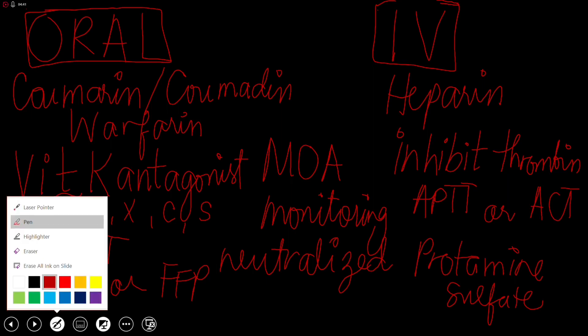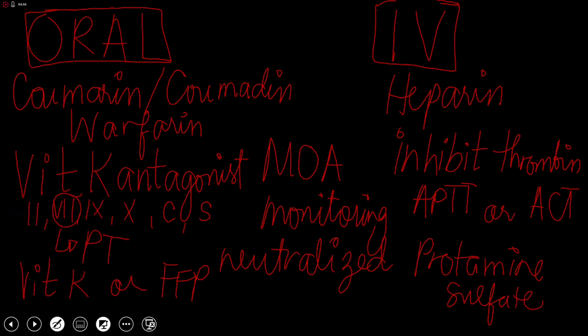Just a quick recap. We have oral anticoagulants: coumarin, coumadin, warfarin, acting as vitamin K antagonists, affecting factors II, VII, IX, X, protein C, and S, monitored by PT, neutralized by vitamin K or fresh frozen plasma. For the intravenous drug, we have heparin, acting as antithrombin, monitored either via APTT or ACT, and neutralized by protamine sulfate.